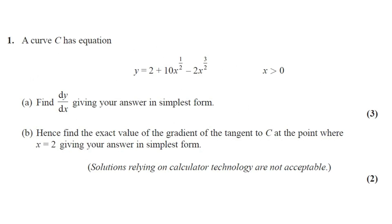Question number 1. A curve C has equation y equals 2 plus 10x to the power half minus 2x to the power 3 over 2. Part A, find dy by dx giving your answer in simplest form. This question got 3 marks.